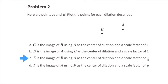Part C: E is the image of B using A as the center of dilation and a scale factor of one-half. Start at A and move towards B but stop halfway. Part D: F is the image of A using B as the center of dilation and a scale factor of one-half. Start at B, head towards A, and stop halfway. It would be at the same location as E.